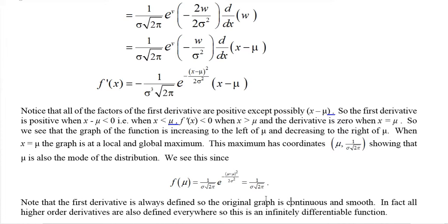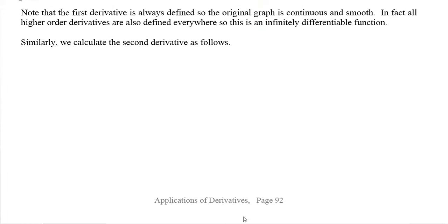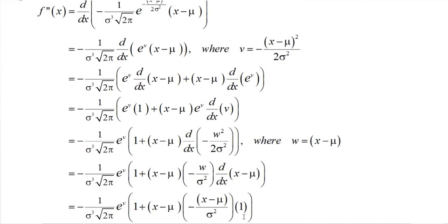The derivative is defined for all x, so the original graph is continuous and smooth, with the domain of both the function and derivative being all real numbers. In fact, we can continue to take second, third, and higher derivatives — it's an infinitely differentiable function. In particular, let's calculate the second derivative.